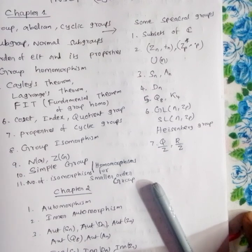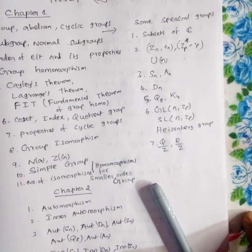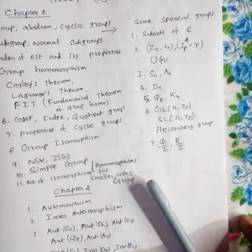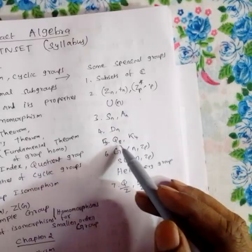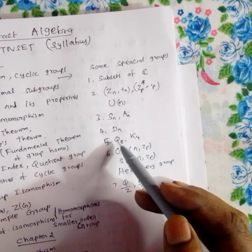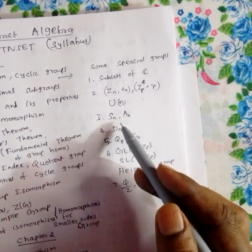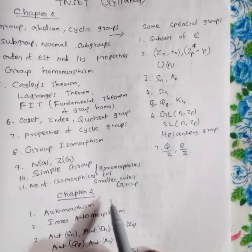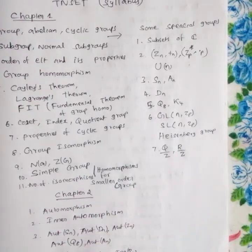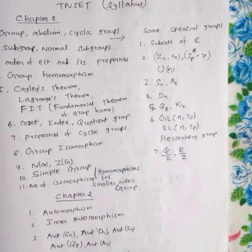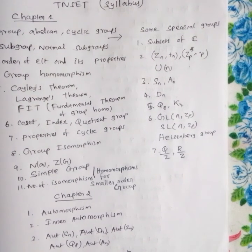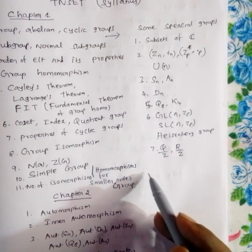For order 8, there are five groups. One is the Quaternion group, another is D4, and the remaining are direct products involving Z2 and Z4.